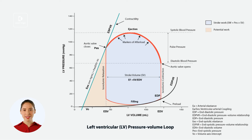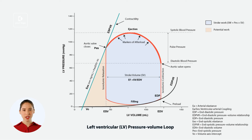First, let's start with a quick refresher on the left ventricular pressure volume loop. This loop represents the changes in pressure and volume in the left ventricle during one cardiac cycle, with volume on the x-axis and pressure on the y-axis. The loop progresses through four main phases: